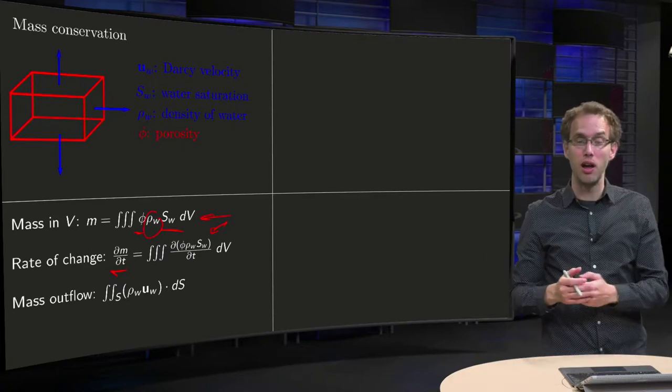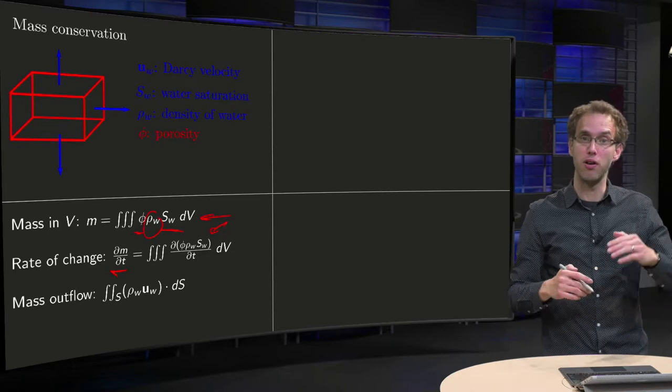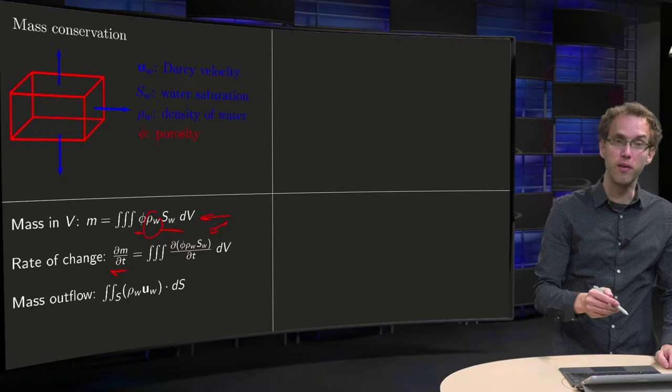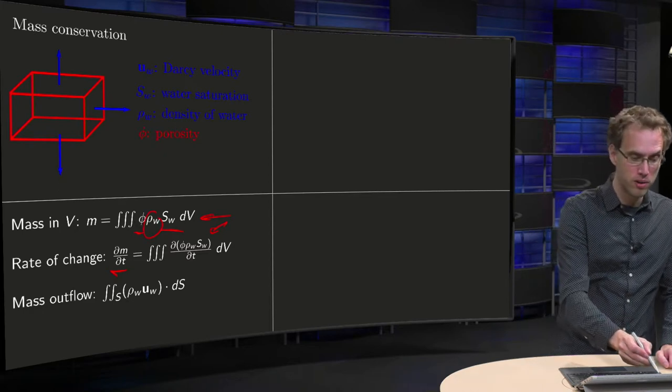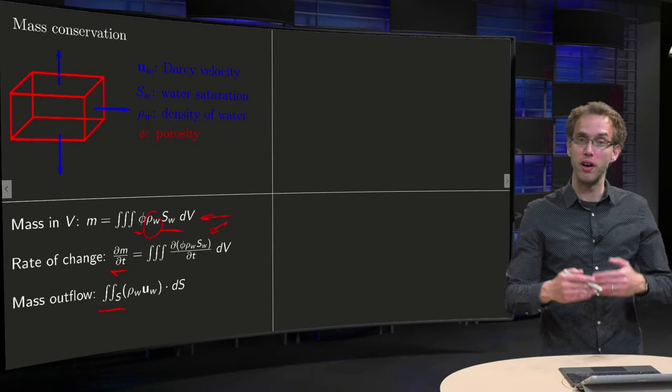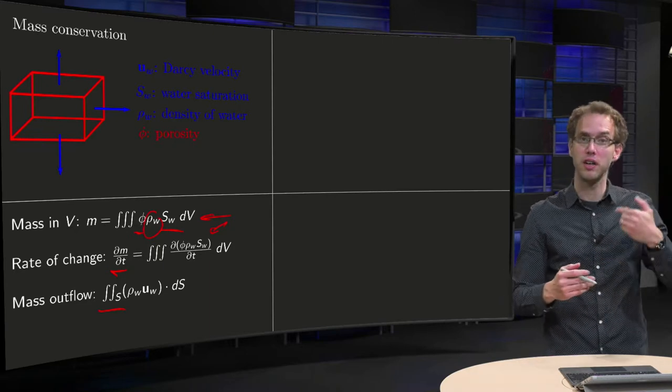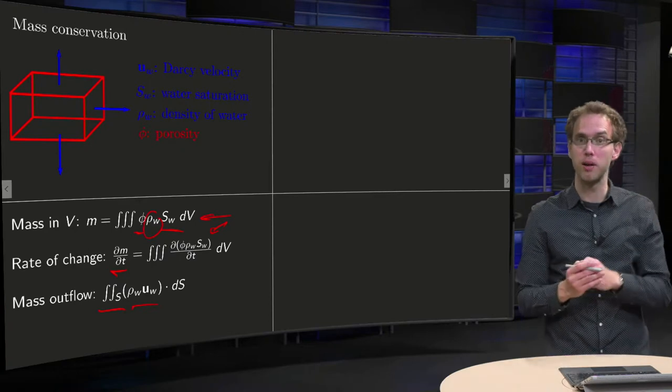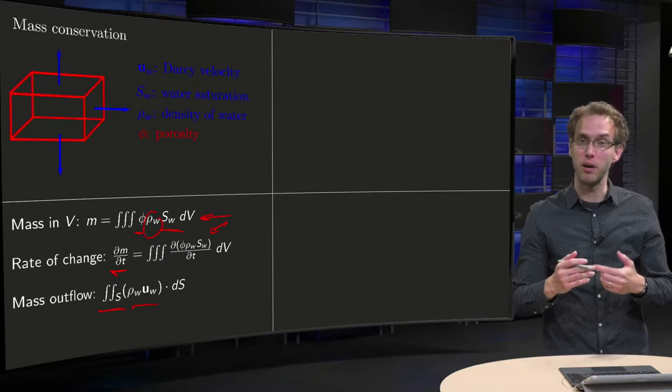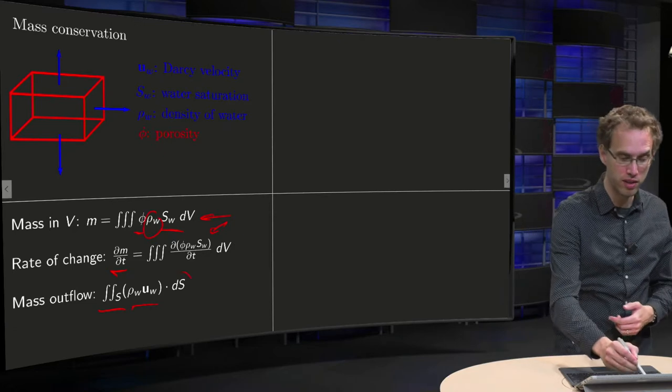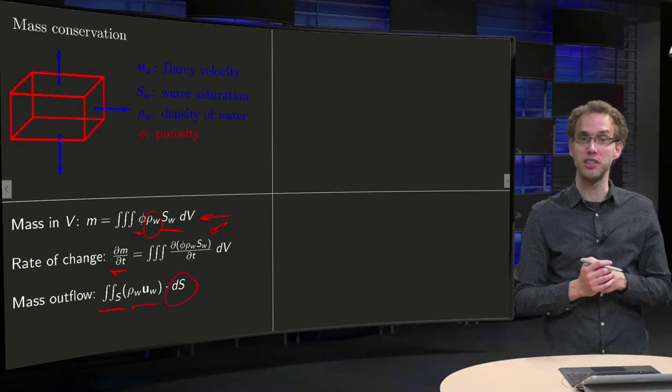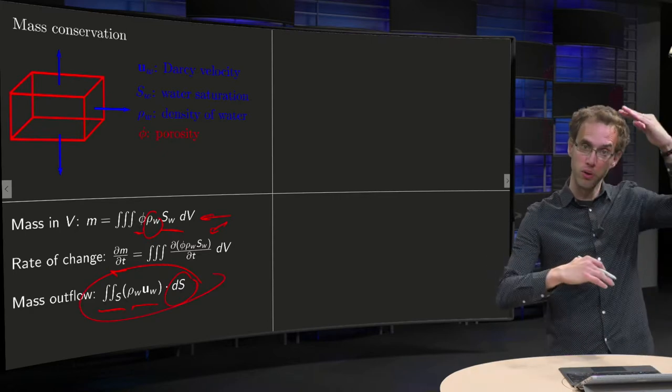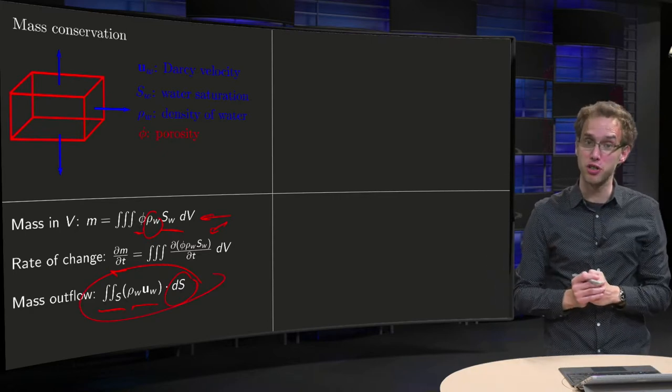Now this mass loss or gain has to go via the six boundaries. So we compute a mass outflow, that's the surface integral through S of your volumetric velocity, a meter per second, times your density in kg per cubic meter. So you get kg per square meter, you integrate with respect to S to get kilograms. So here you have your outflow, which is the surface integral, which goes through your six surfaces.